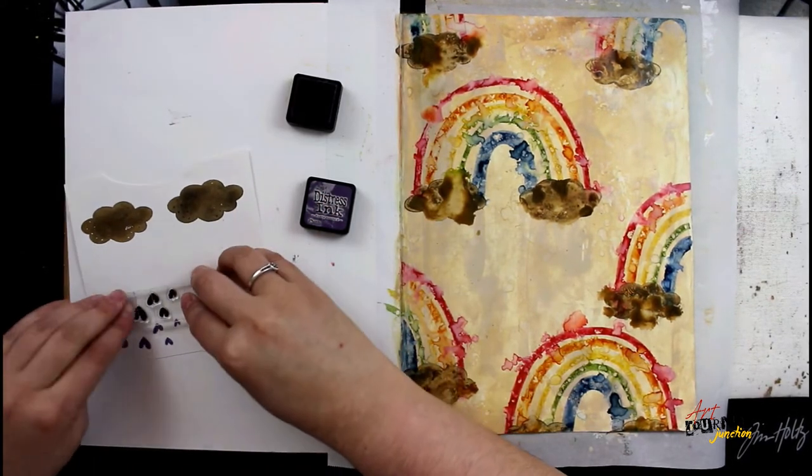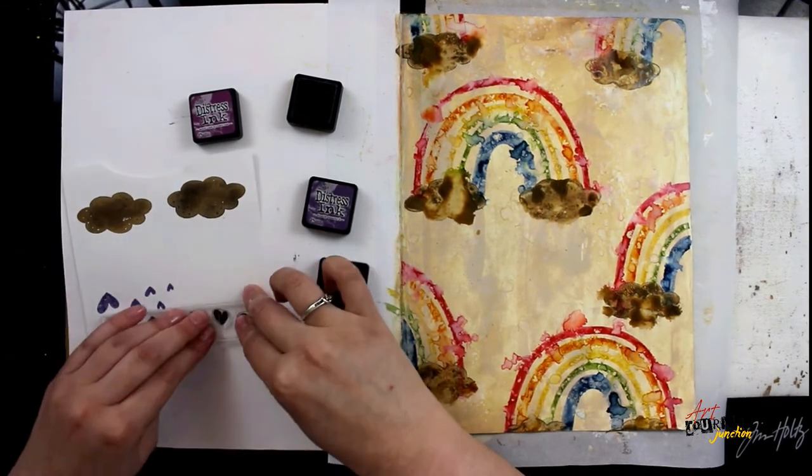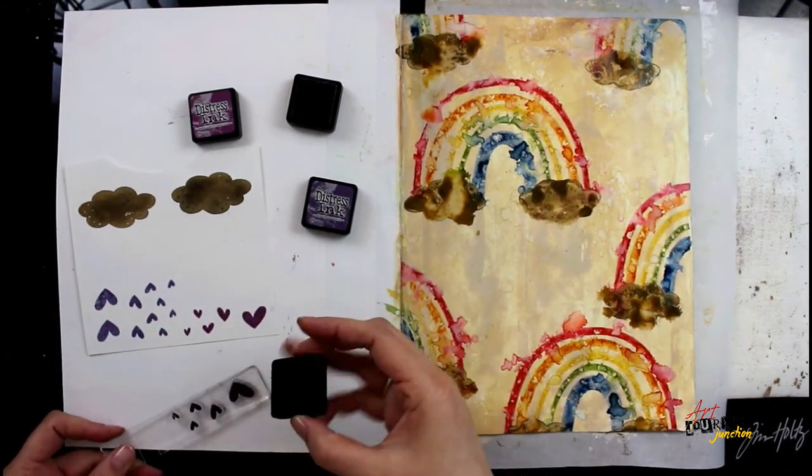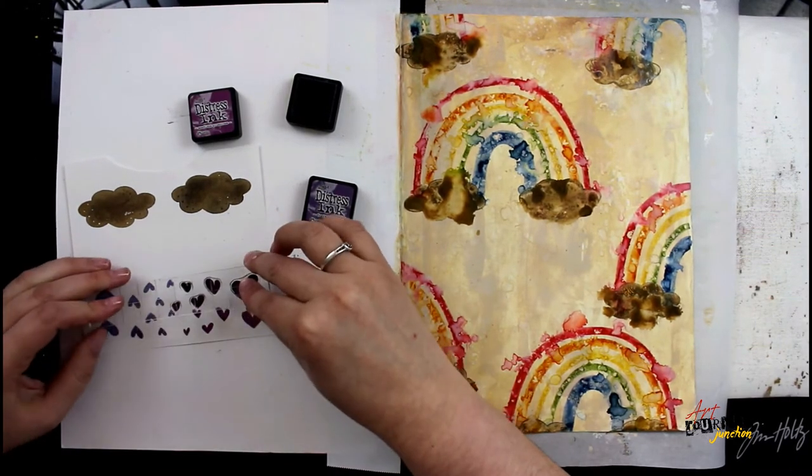While that's drying, I'm also using a few colors of distress ink, two different purples. Those colors are listed in the description below. I'm stamping those hearts out in the two different colors of purple and then I will cut them out with my Fiskars scissors.